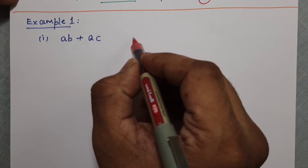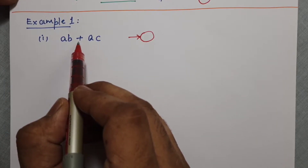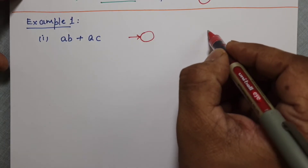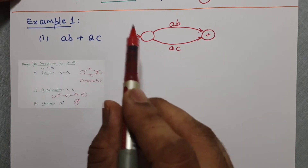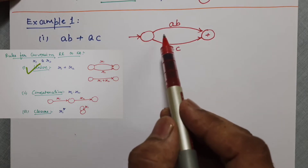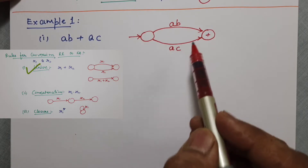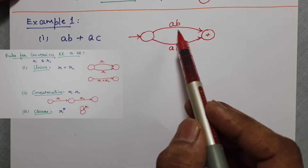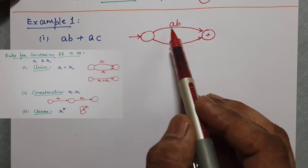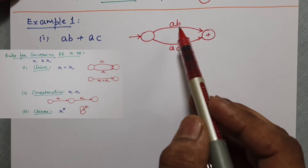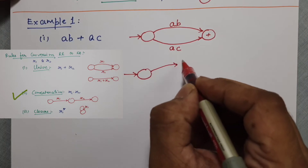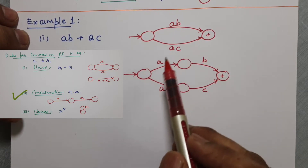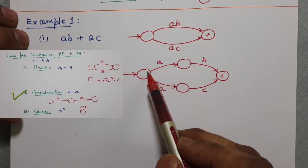Let us draw the starting state. Since there is an OR, there will be two things going from the starting state to the final state. Using rule number one, AB plus AC means I can have one arrow representing AB plus AC, and then separate AB and AC. But this is not a valid automata because an automata can only have one alphabet per transition, not a string. So we convert this by using rule number two, where AB can be separated by inserting a state in between A and B.